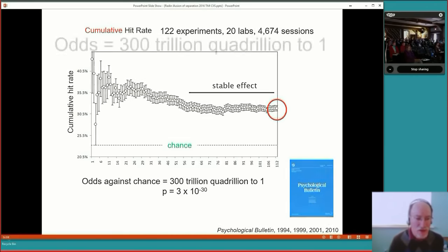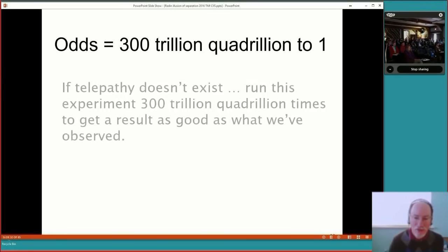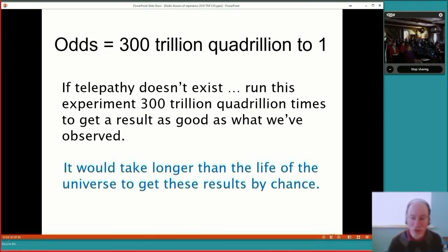What does it mean to say that the odds are 300 trillion quadrillion to one? It means that if telepathy doesn't exist, then we could run the same experiment 300 trillion quadrillion times to get a result as good or better than what we actually have observed. Or that it would take longer than the life of the universe to get these results by chance. That's based on how long it takes to run one session. It takes roughly 90 minutes to run one session.